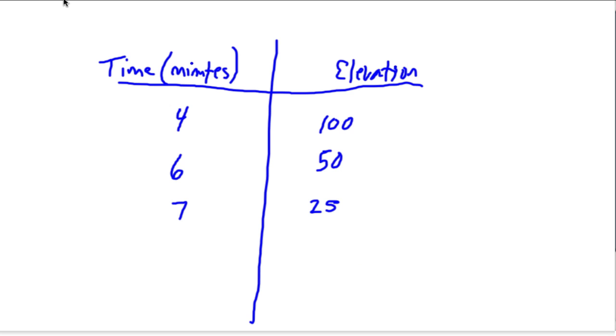What about if things are decreasing, like elevation? Again, look at our first given value, which is 100. And then notice it's not really our starting point. This is 4 minutes into the experiment.